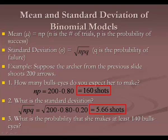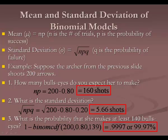What is the probability that she makes at least 140 bullseyes out of 200? At least problems go backwards: one minus the probability of the opposite, which is up to 139. So one minus binomCDF(200, 0.80, 139) gives 99.97% — a very high chance she makes at least 140.